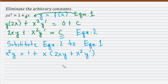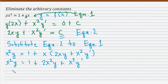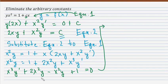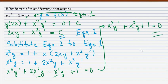Simplifying: x squared y equals 1 plus 2x squared y plus x cubed y prime. Rearranging and equating to 0: x cubed y prime plus 2x squared y minus x squared y plus 1 equals 0. Combining like terms gives x cubed y prime plus x squared y plus 1 is equal to 0. That is the differential equation free of the arbitrary constant c — our final answer.